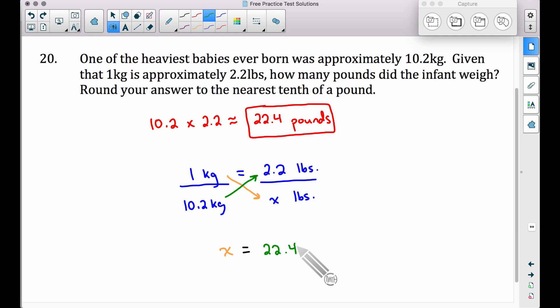But we did go ahead and round that back here at the beginning because the problem said round to the nearest tenth of a pound. And as you can see, we do have x by itself, x pounds. x is going to be around 22.4 pounds, just like what we got up here.